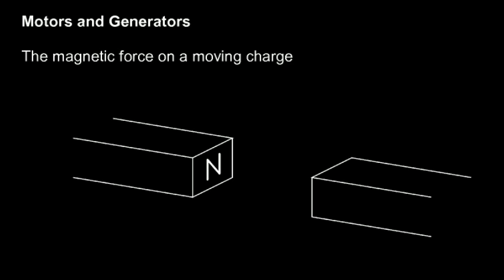Here's the idea. Suppose we have two magnetic poles. Here's a north pole — this is just one end of a bar magnet. And over here we have a south pole, another end of a different magnet.